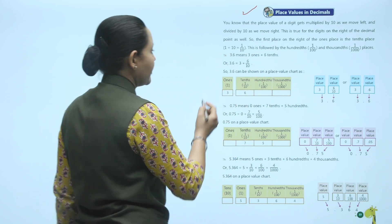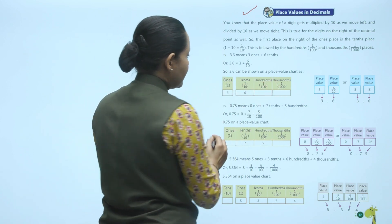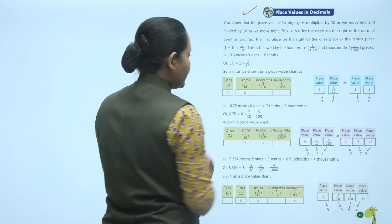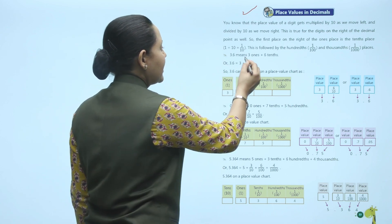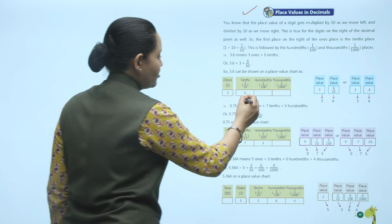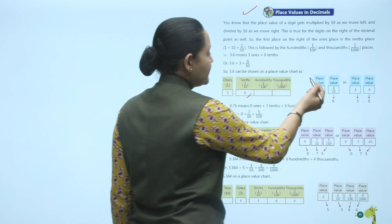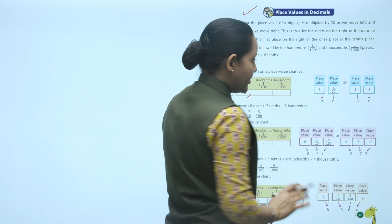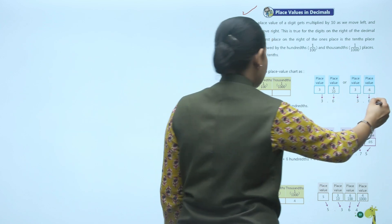On a place value chart for 3.6: the ones place has 3, the tenths place has 6. The place value of 3 is 3, and the place value of 6 is 6 upon 10, or 0.6. So 3.6 can be written as 3 plus 0.6.